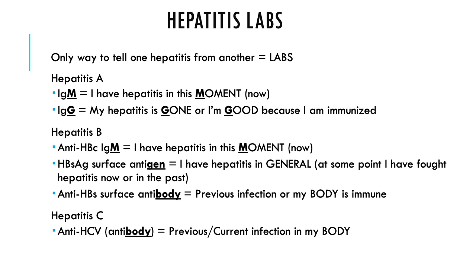Looking at hepatitis labs — these can get really confusing, but it's the only way we tell one type of hepatitis from another. For hepatitis A, you look at IgM or IgG. IgM means you have hepatitis right now in this moment, whereas IgG means your hepatitis is gone or you're good because you're immunized — G is good. It could mean you received a vaccination and are immune, or you had hepatitis at some point but no longer have an active infection.